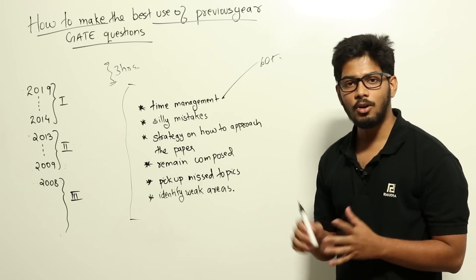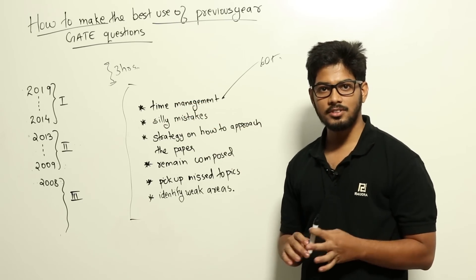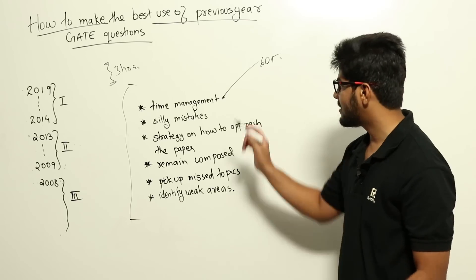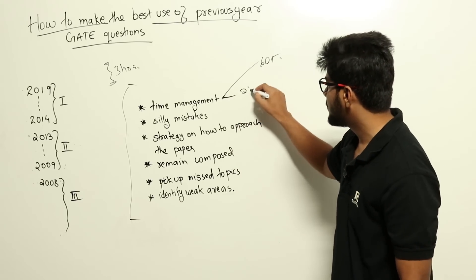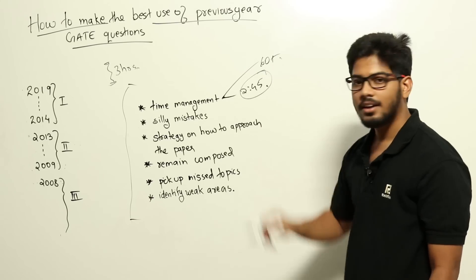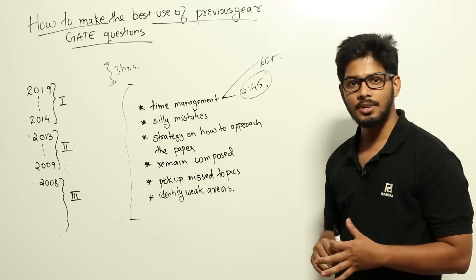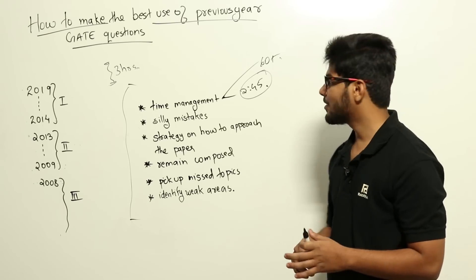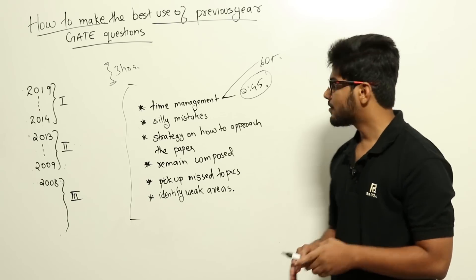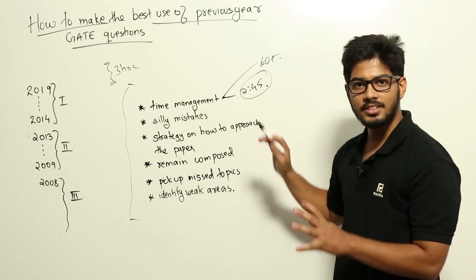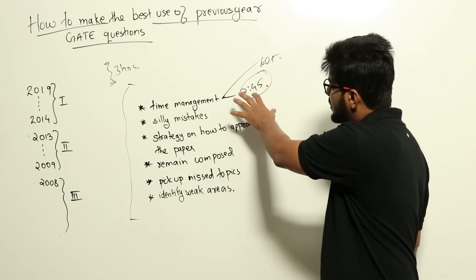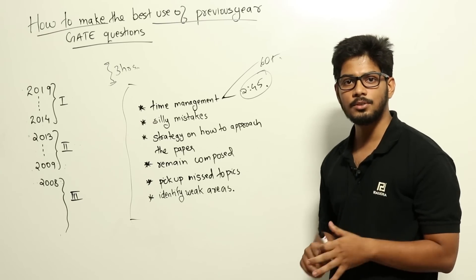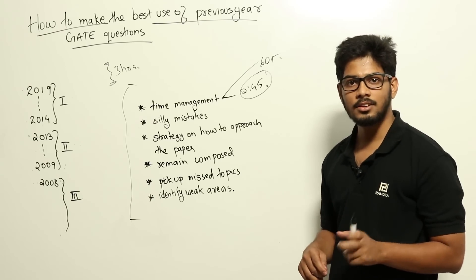Time management is a personal thing — you should find out how many hours you need to solve the paper and set a target below three hours. For me, the target was two hours and 45 minutes. Some people target two hours and 30 minutes, though that may be too aggressive. Find the right time for yourself, try to finish all questions within your target, and use the remaining time to review unanswered questions and check calculations.